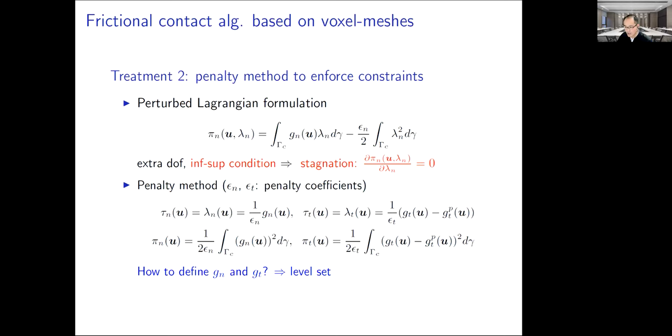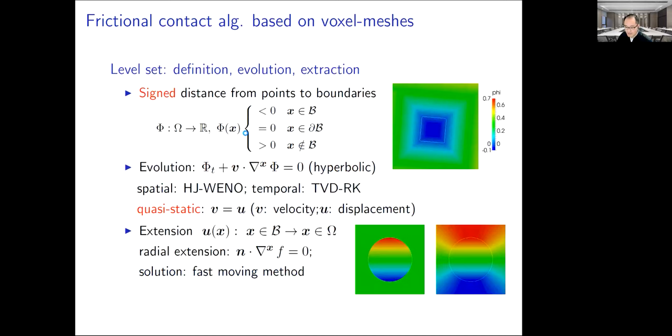We here introduce the level set function. One definition of level set function is the signed distance from points to boundaries. If a point is inside the body, phi is negative. On the boundary, phi is zero. Outside the body, phi is positive.